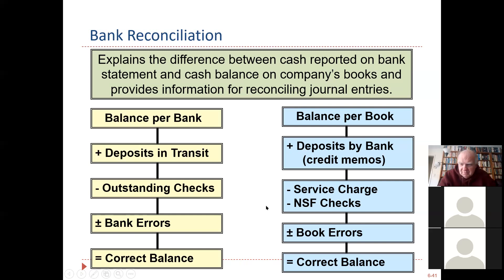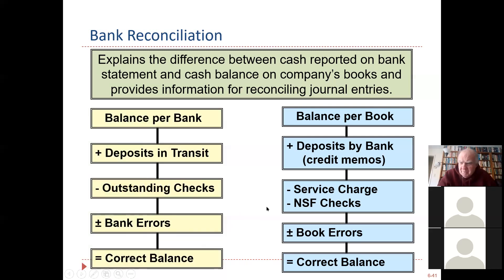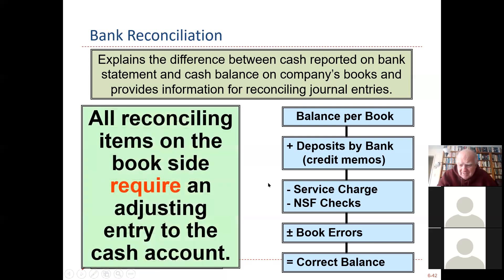NSF check — non-sufficient funds — that's a bounced check. A check we got from a customer that we added to our checkbook, and now the bank is telling us the check was no good, so we have to take it out of our balance. All reconciling items on the book side require adjusting entries — not the bank side.